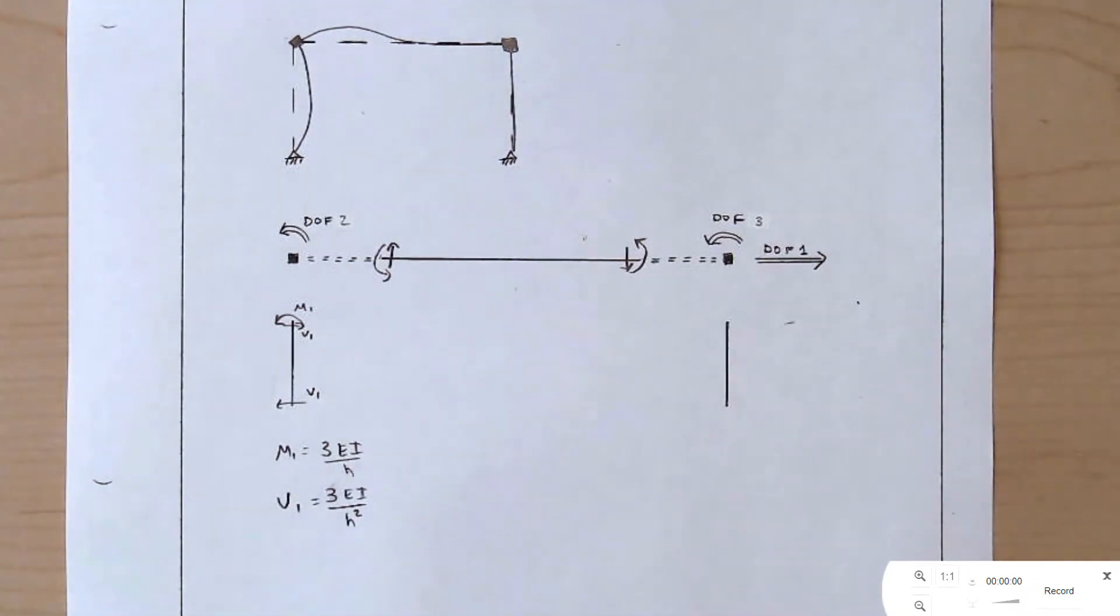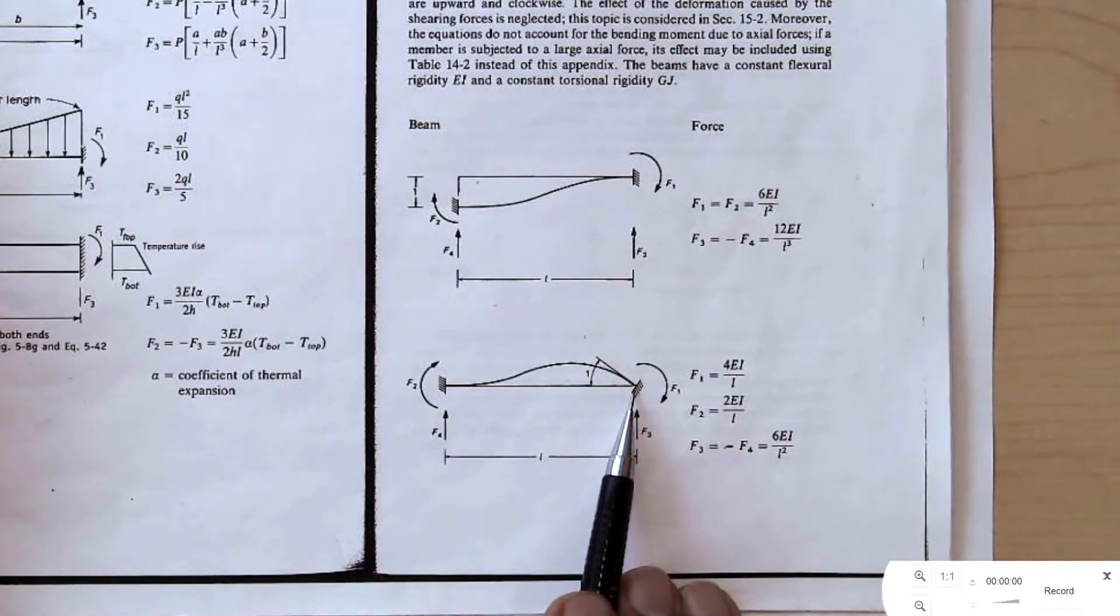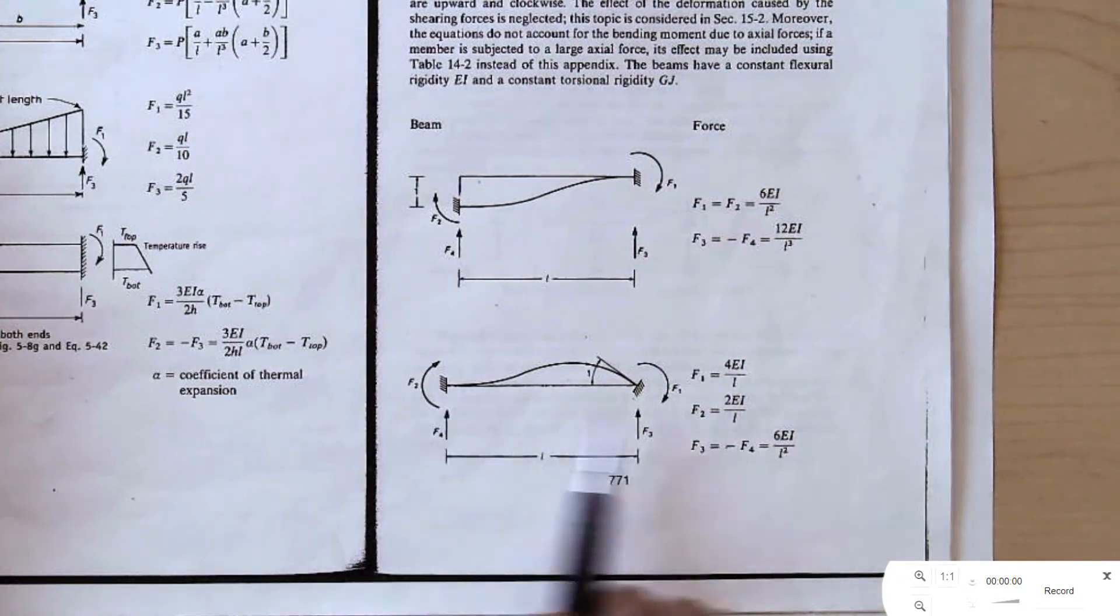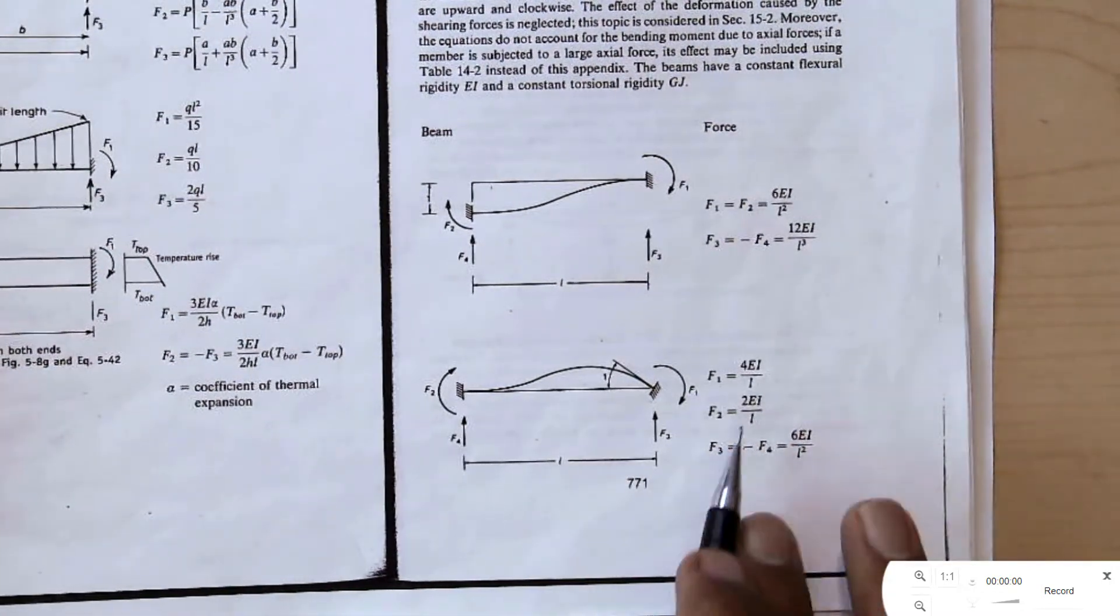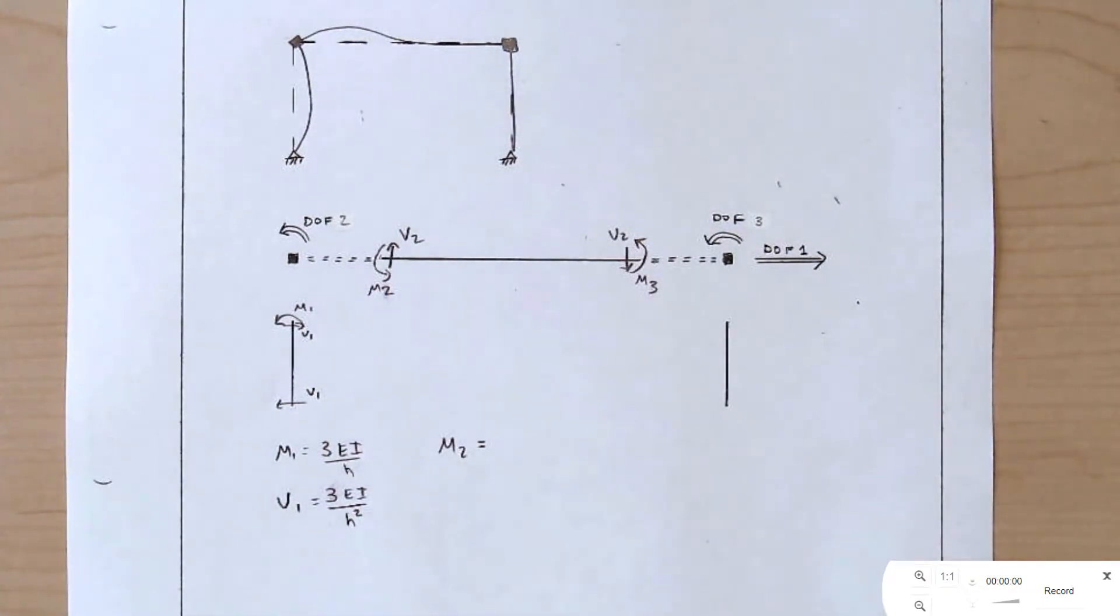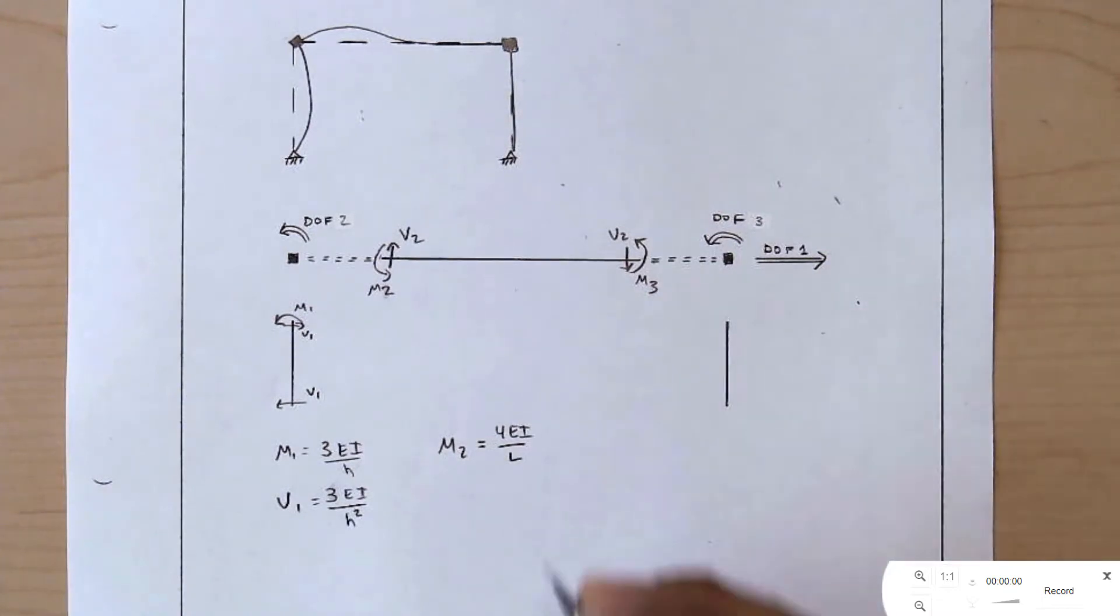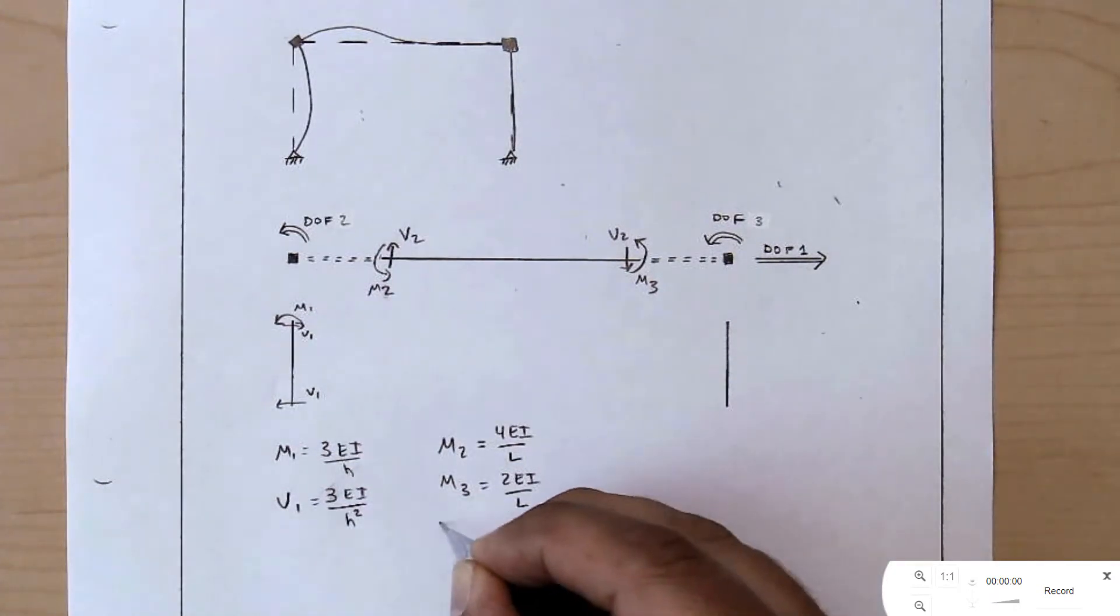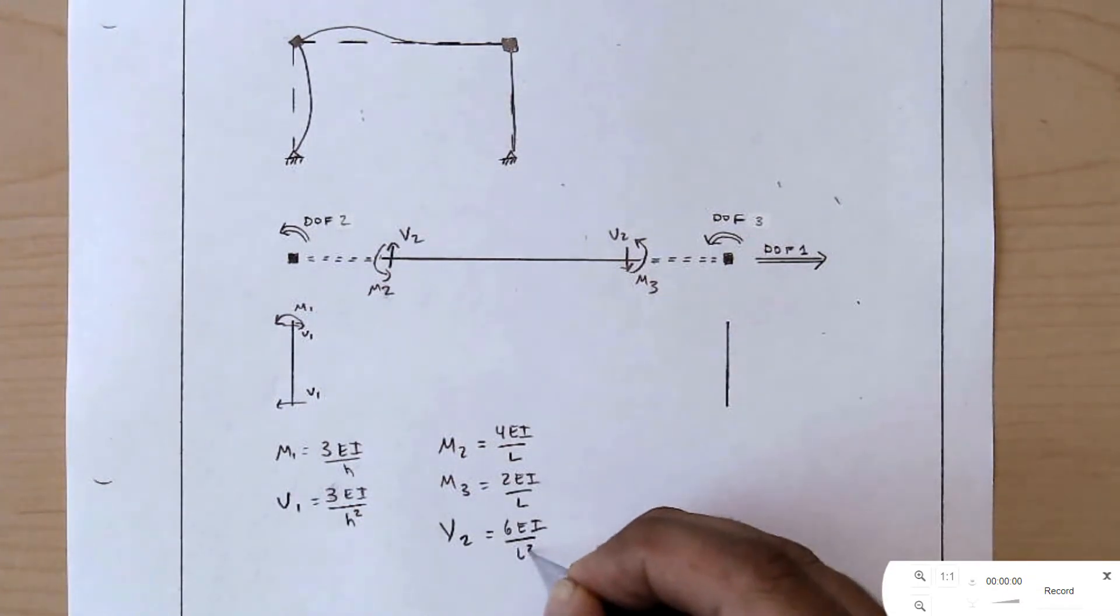Over here, we now have to look at the other term in the table. We have fixed, fixed, there's a rotation at this end. The moment at the location of the rotation is 4EI over L. The moment on the other end is 2EI over L. And the shears are 6EI over L squared. Now we actually are using the L. We'll call these M2, M3, and V2. Where M2 is on the node that's being rotated, so that's 4EI over L. M3 is on the other side, 2EI over L. And V2 is 6EI over L squared.